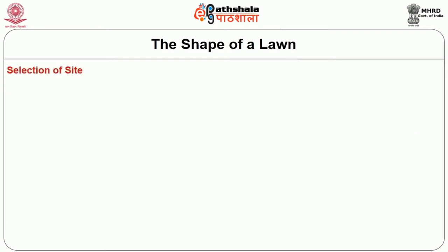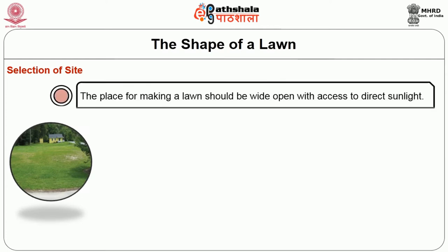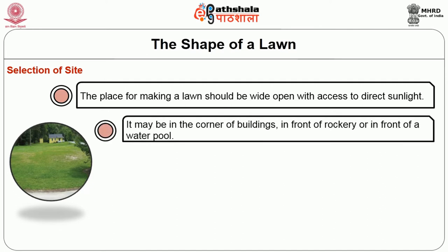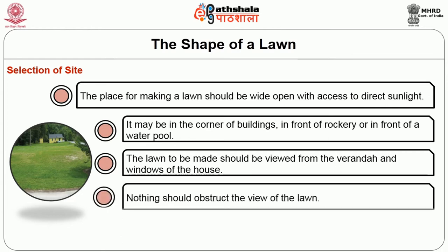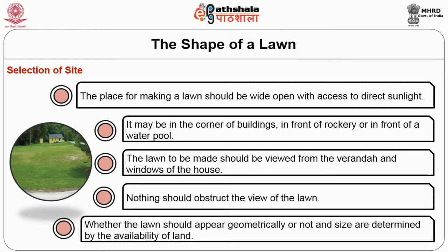First, we will see the selection of site. The place for making a lawn should be wide open with access to direct sunlight. It may be in the corner of buildings, or in the front of rockery, or in front of the water pool. The lawn to be made should be viewed from the veranda and windows of the house. Nothing should obstruct the view of the lawn. Whether the lawn should appear geometrically or not and its sizes are determined by the availability of the space.